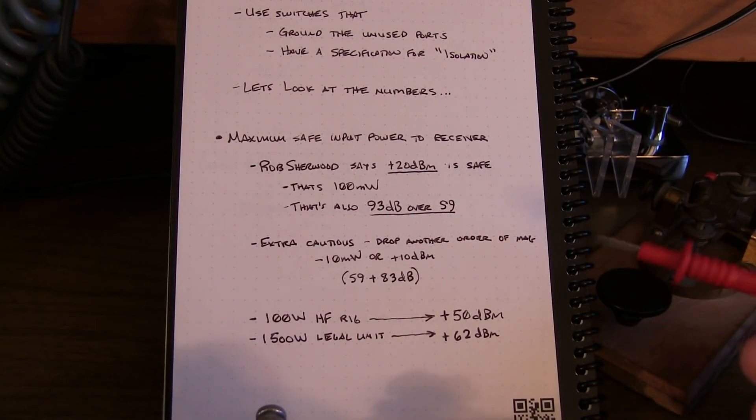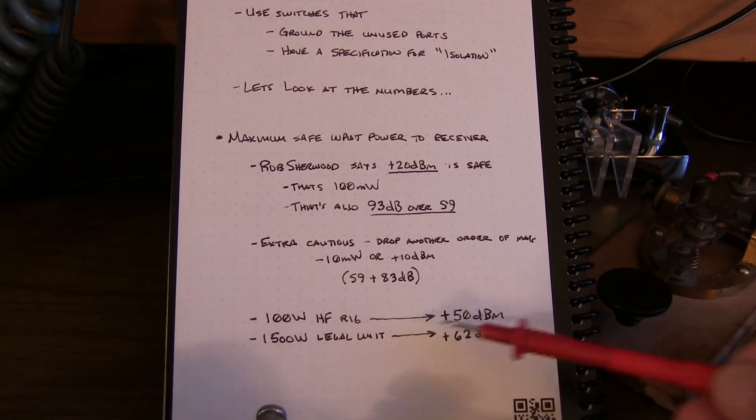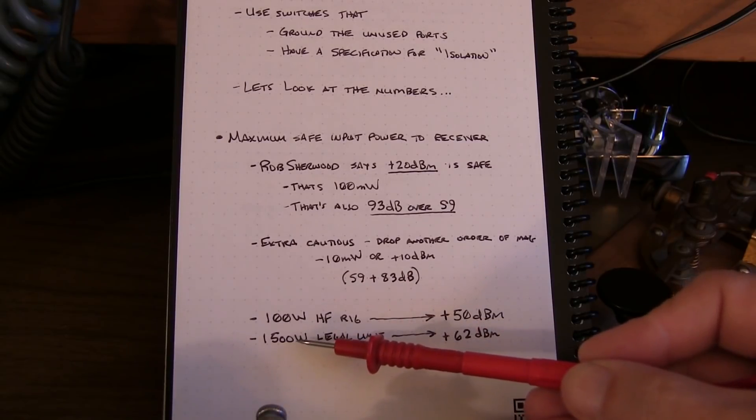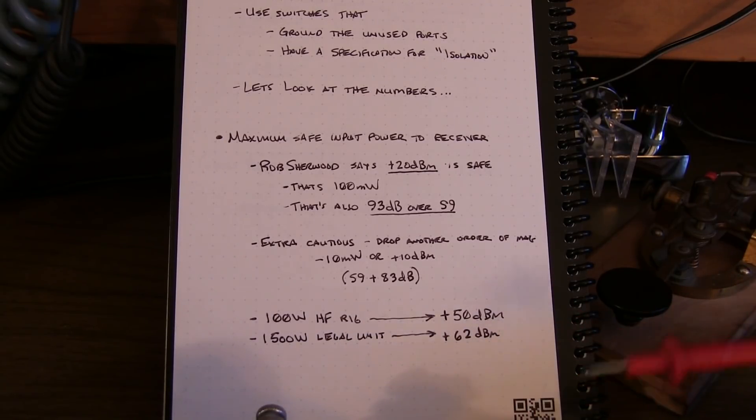Now to get an idea for the numbers, 100 watts, like a 100 watt HF rig is plus 50 dBm. And a legal limit here in the US of 1500 watts is plus 62 dBm. So let's keep those numbers in mind and see how much isolation we need.